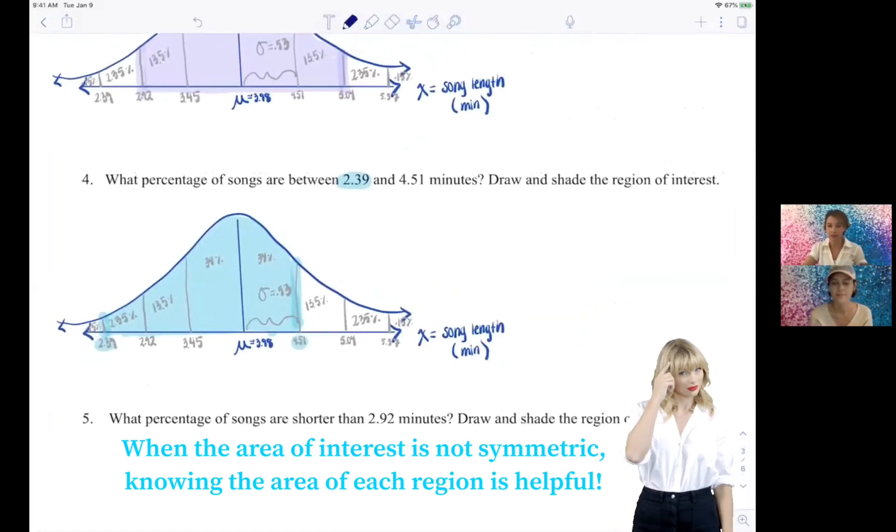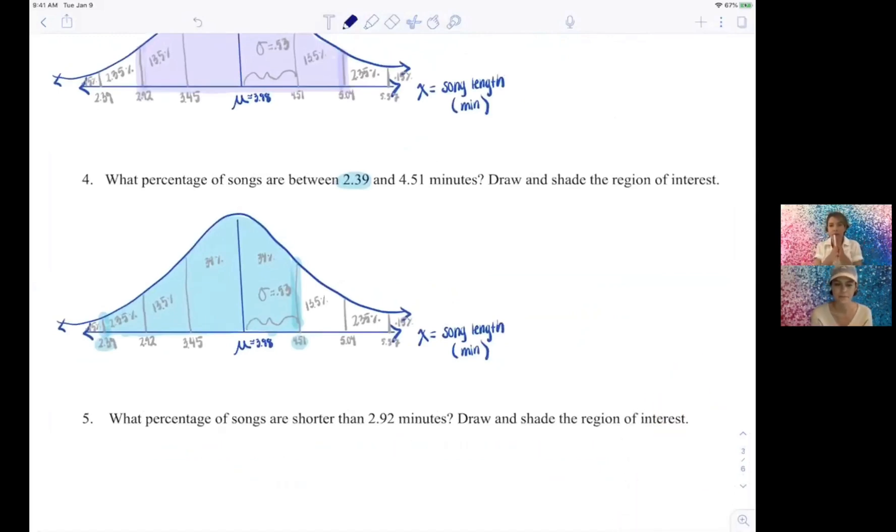So we have 2.35 percent, 13.5 percent, and then the 68 percent. And if we add all those up, what do we get? 83.85 percent. And doesn't it look like that's about 83.85 percent? Yeah, totally.